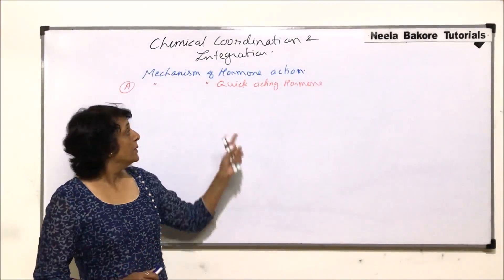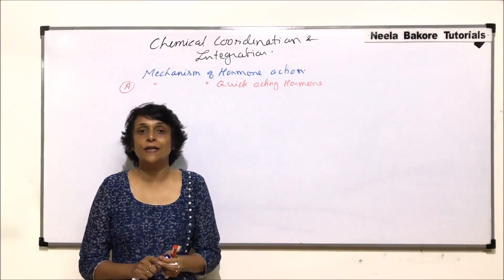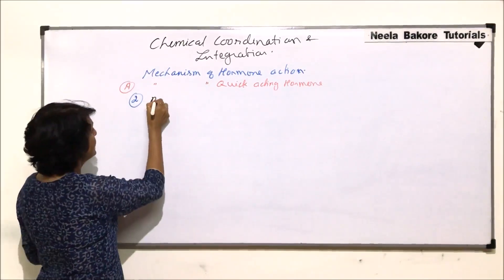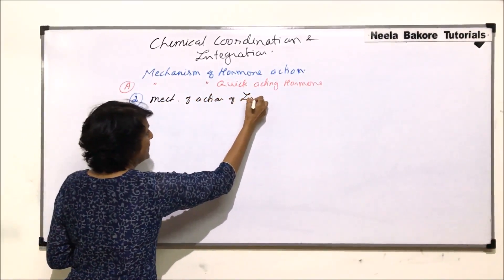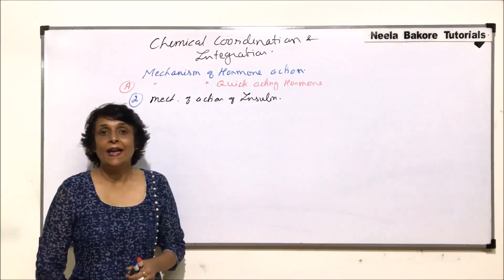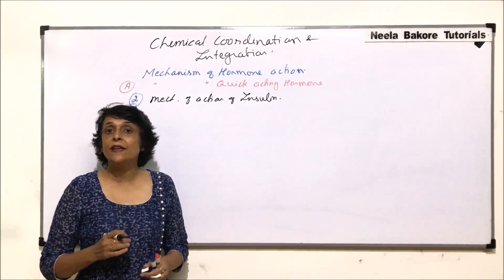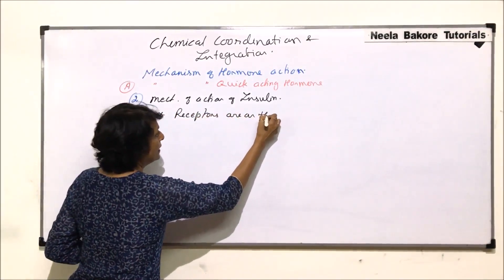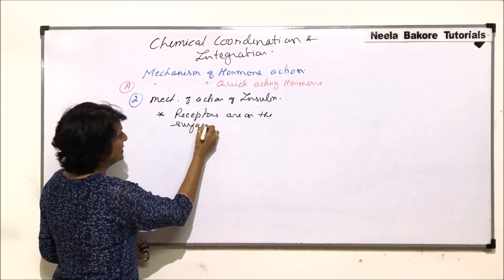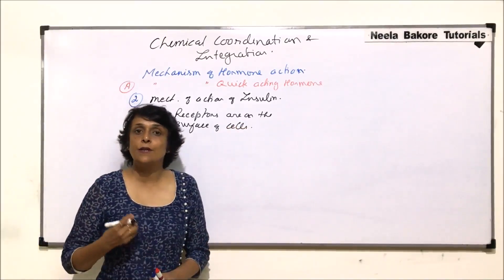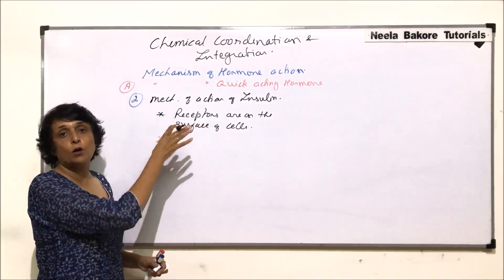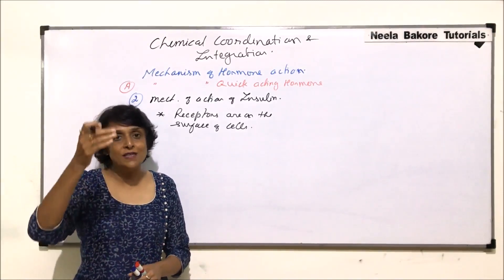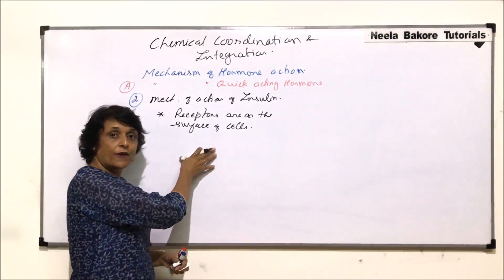In this part we will discuss the mechanism of action of insulin, another quick-acting hormone. We have already talked about catecholamines and now we are discussing insulin. Quick-acting hormones have their receptors on the membrane. The reason is that they are not fat soluble, and since our plasma membrane is mainly a phospholipid layer, they cannot cross it easily.